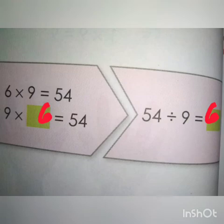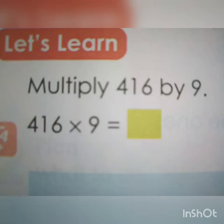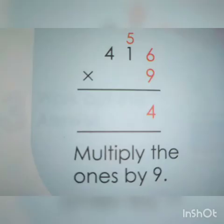Now we are going to multiply 3-digit number by 9. 416 into 9 equals blank. Start from ones place: 6 times 9 equals 54. From 54, 4 is in ones place, so we have to write 4 in ones place. From 54, 5 will be carried over to tens place. Now start from tens place: 1 times 9 equals 9. 9 plus carried over value 5 equals 14.